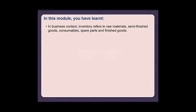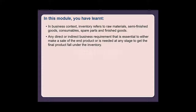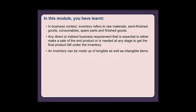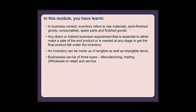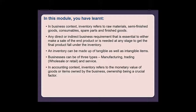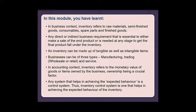In this module you have learned: In a business context, inventory refers to raw materials, semi-finished goods, consumables, spare parts, and finished goods. Any direct or indirect business requirement essential to make a sale of the end product or needed at any stage to get the final product falls under the inventory. An inventory can be made up of tangible as well as intangible items. In an accounting context, inventory refers to the monetary value of goods owned by the business, with ownership being a crucial factor. Any system that helps achieve the expected behavior is a control system, and an inventory control system helps achieve the expected behavior of the inventory.